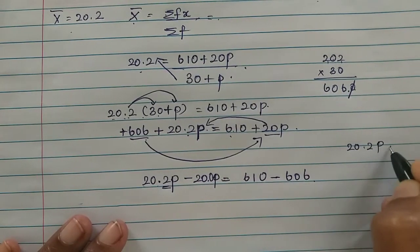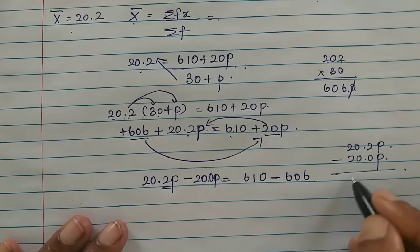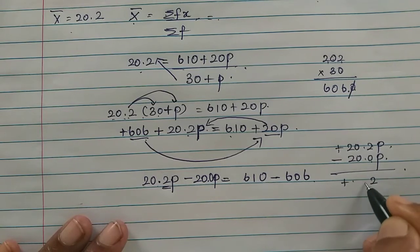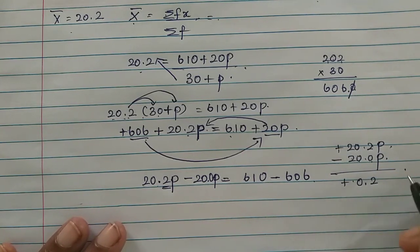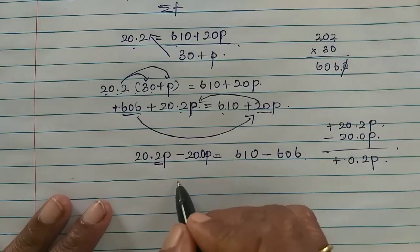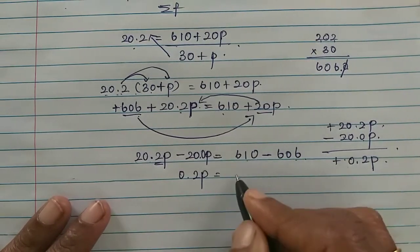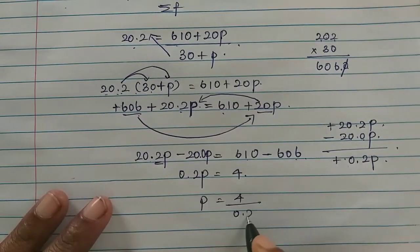20.2P minus 20P, so 2 minus 0, that's 0.2P. This equals 610 minus 606, which is 4. So 0.2P equals 4. Therefore P equals 4 divided by 0.2.